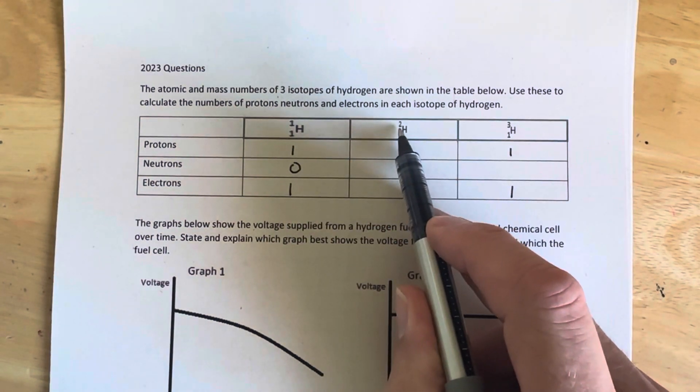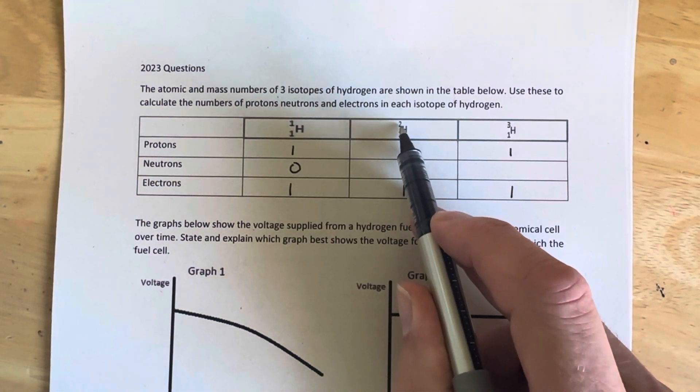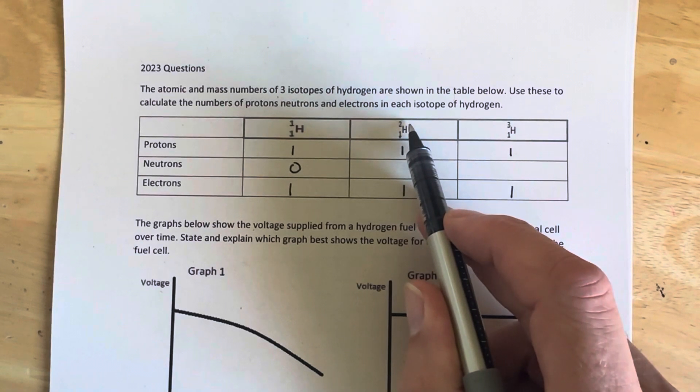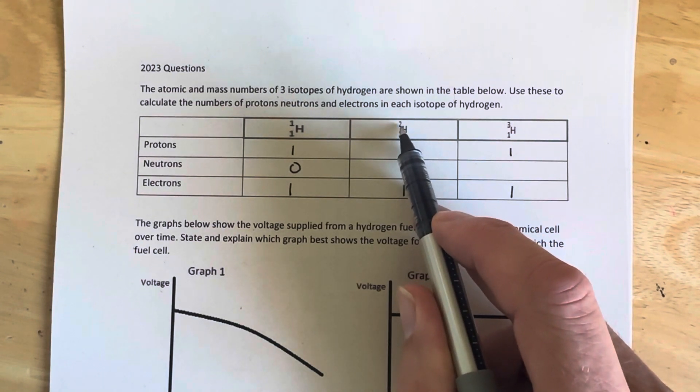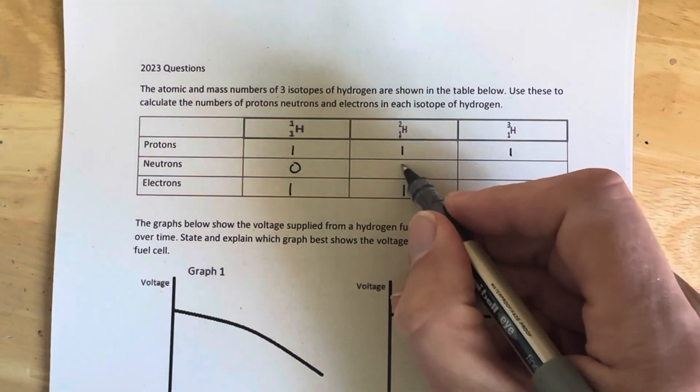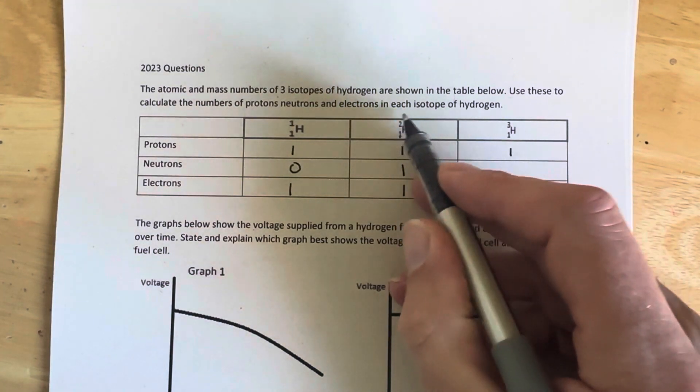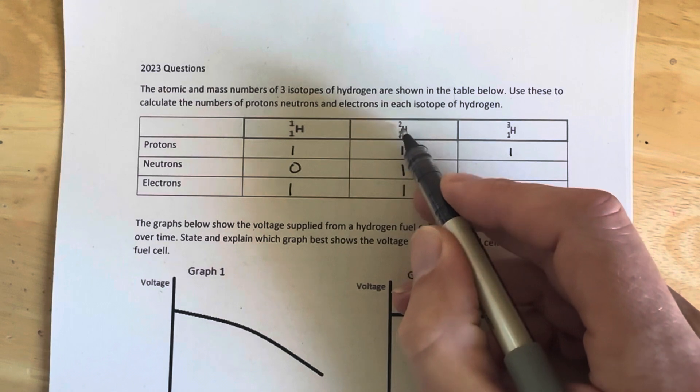In this one here, the mass number is two. So there's two protons and neutrons, because electrons have virtually no mass. So to subtract the two from the one, we get one. There's one neutron in that. So in other words, this isotope is made of one proton and one neutron.